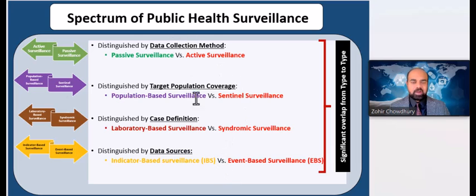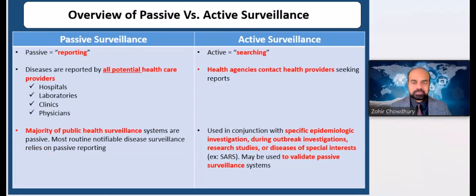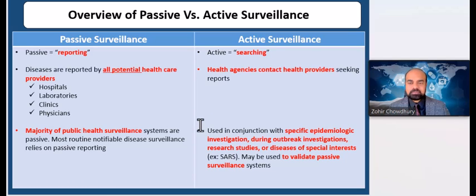However, we can distinguish them on a broad aspect. Let's look at these two primary types of public health surveillances — active versus passive — which is the main focus here. Passive surveillance focuses on reporting, whereas active surveillance is really about searching.